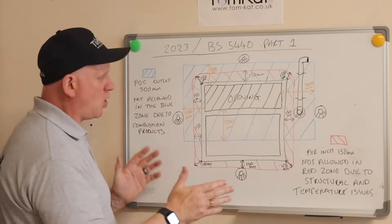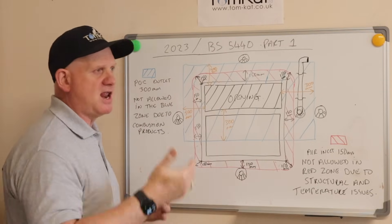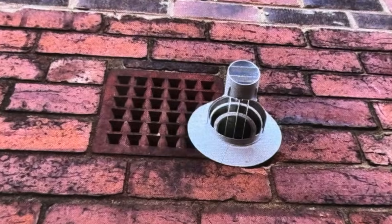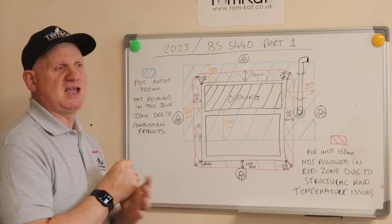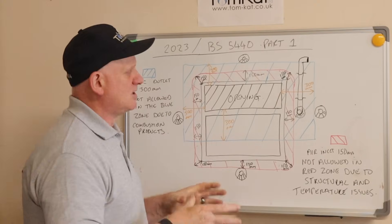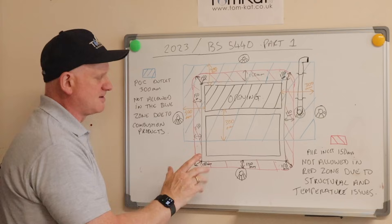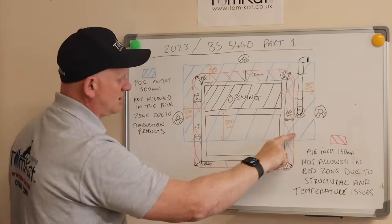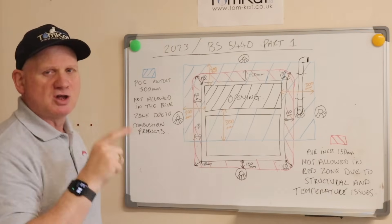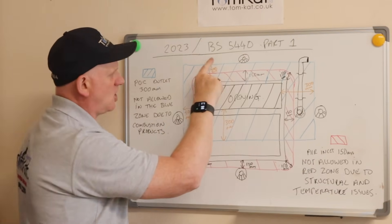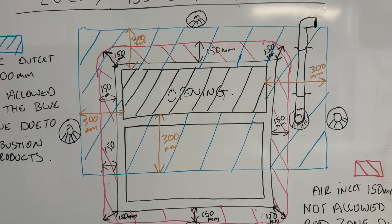Now when you're installing a fan flued boiler, which basically condensing boilers are, you have to be more than 300mm away from an opening in a building. So that could be a ventilation opening, it could be a window, it could be a door, it could be a patio door, it could be vented eaves. So you can see the blue section is 300mm away from this opening.